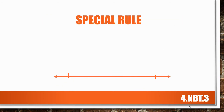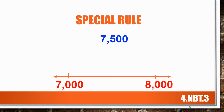That's awesome. Now we do have a special rule. What if the number was 7,500 and we're rounding to the nearest thousand? Well, 7,000 is before and 8,000 is after. Where does 7,500 fall? Right in between — exactly in between. When it falls exactly in between, we always round up. So this would round to 8,000. That's a special rule.